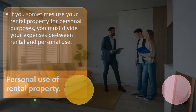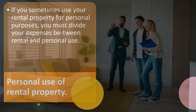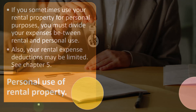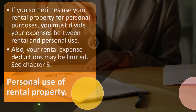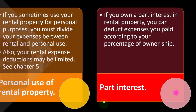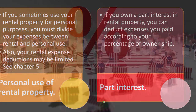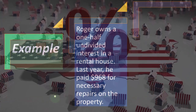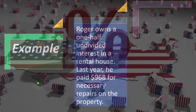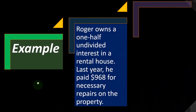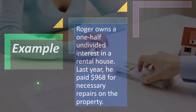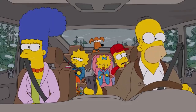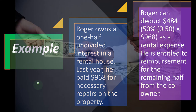Personal use of rental property is where it gets commingled and messy. If you sometimes use your rental property for personal purposes, you must divide your expenses between rental and personal use, and your rental expense deductions may be limited. We'll dive into that more in Chapter 5. Part interest: if you own a part interest in rental property, you can deduct expenses you paid according to your percent of ownership. Example: Roger owns a one-half undivided interest in a rental house. Last year he paid $968 for necessary repairs on the property. Roger can deduct $484 — 50% — as a rental expense, and he is entitled to reimbursement for the remaining half from the co-owner.